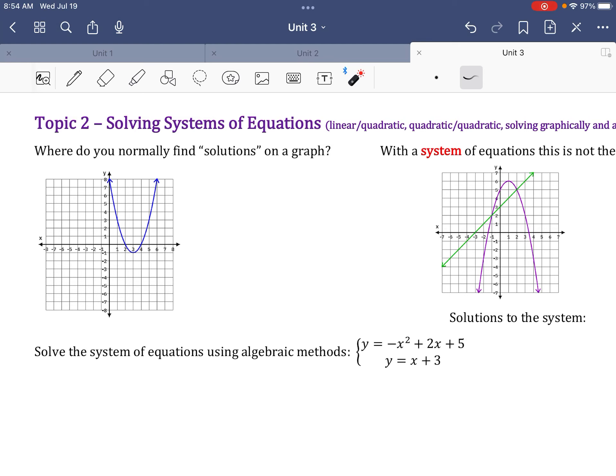Now, your systems in Algebra 1 were just lines, so when you were graphing, oh here's my line, here's my other line, it's where they intersect, that's your solution to your system of equations. It's the one place that satisfies both equations, right, like the point that basically makes both equations true.